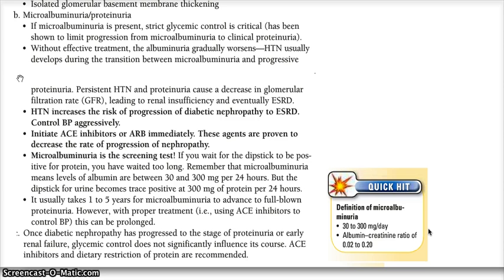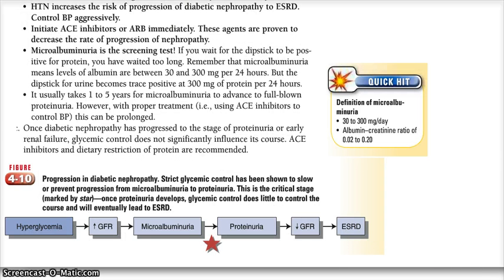This is a very high yield point to remember. When a patient comes in with diabetic nephropathy, the first thing you do is check for microalbuminuria by checking their albumin-to-creatinine ratio — albumin over creatinine — which should be 0.02 to 0.20. The good news is microalbuminuria can actually be reversed by strict glycemic control.